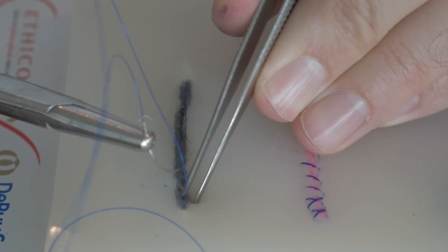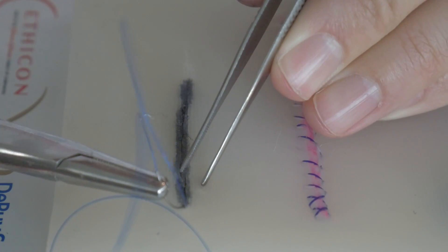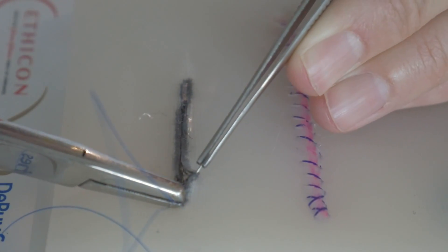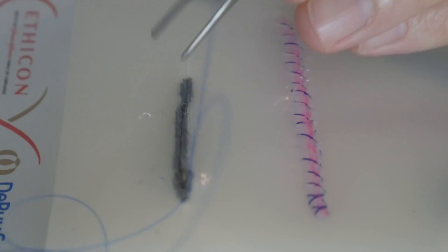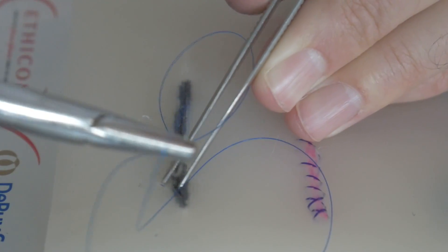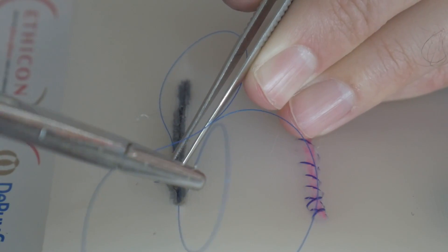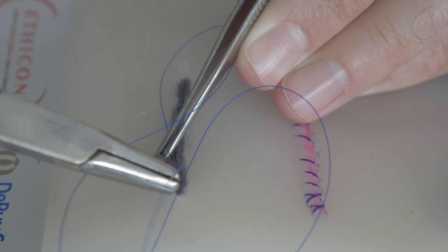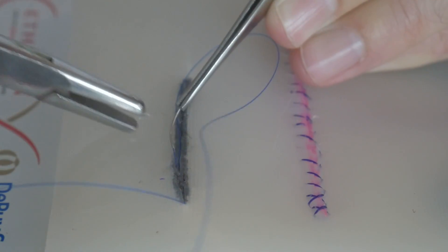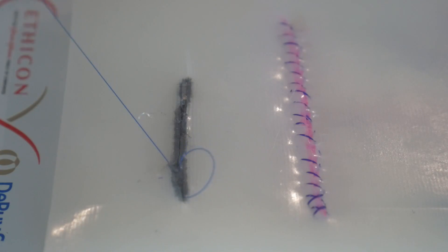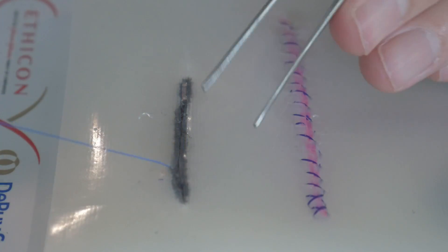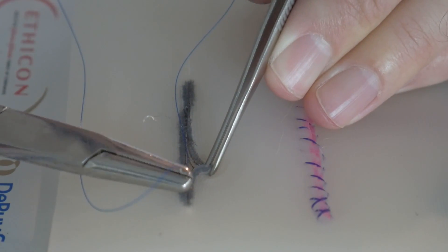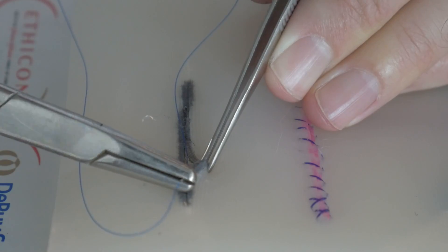Now it's important to note when you are doing a running subcuticular stitch that you really try hard to stay at the same level and the same layer. Don't go too deep. Don't go too superficial. If you go too superficial, the suture is going to be coming out of the skin. If you go too deep, you're going to have these weird kind of folds of the incision as you close it. And they're going to fold in on itself. So you really have to stay kind of at the same level and in the same layer as well as you can throughout the whole running continuous stitch.